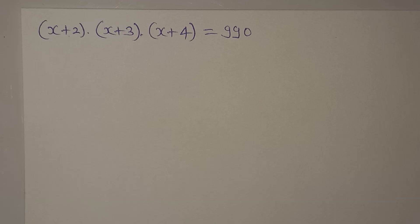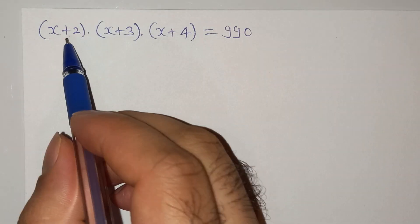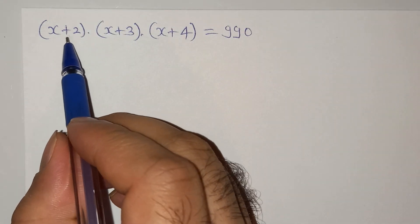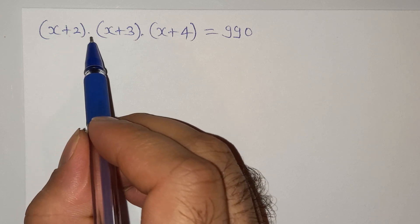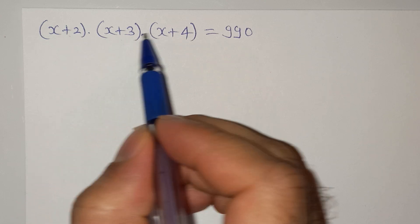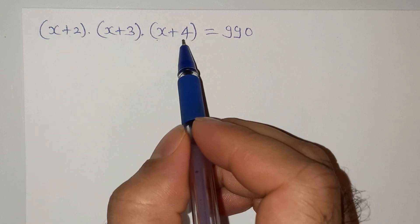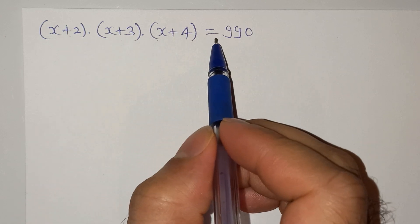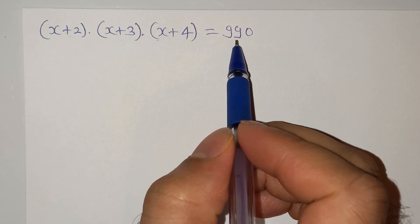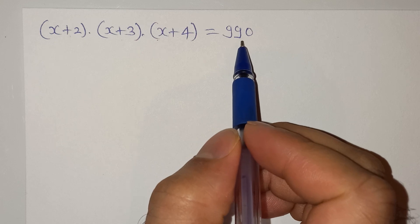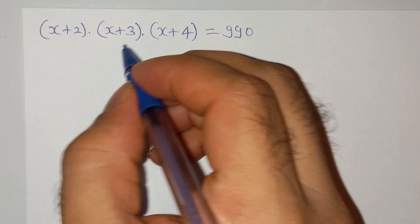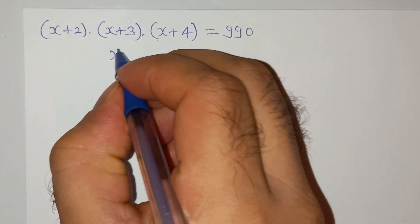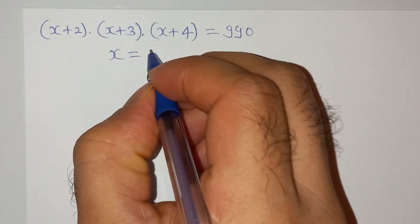Hi friends, welcome back to your channel. Today we are going to solve this question: (x+2) multiplied by (x+3) multiplied by (x+4) equals 990. We have to find the value of x.